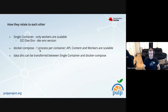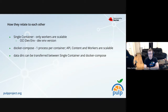In the single container, you have multiple processes — one of those processes is scalable, and the other worker processes are scalable too. The OCI development environment is the development environment version of the single container. It lets you do things like mount your directories containing the source code for Pulp, and it provides convenience features that users would never need or want in production.